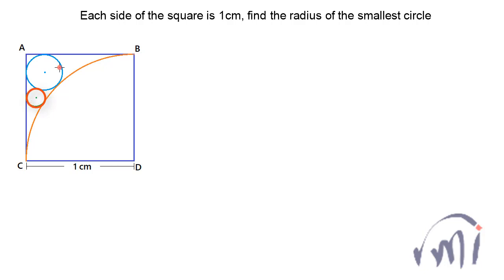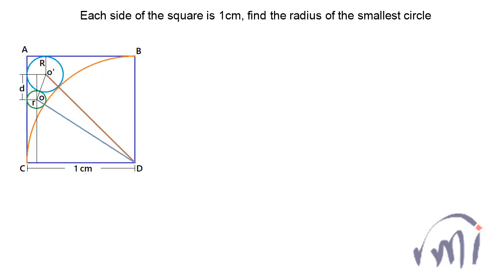This is a very interesting problem with lots of smart calculations, so I would suggest you watch this video till the end. I am going to add a few more lines to this drawing. I have joined point D with the center O' of the light blue circle and center O of the green circle. I have assumed the radius of the blue circle as R and the radius of the green circle as small r.